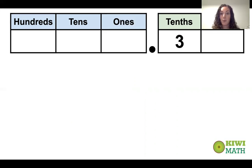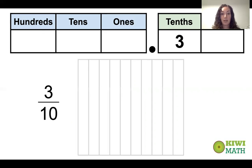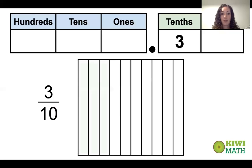Let's think about another example: 0.3. We would read this as three tenths, because it's in the tenths place. As a fraction, that would be three over ten — three tenths. In a model, we have ten equal pieces and three shaded in. That would be three tenths in a model, or 0.3.